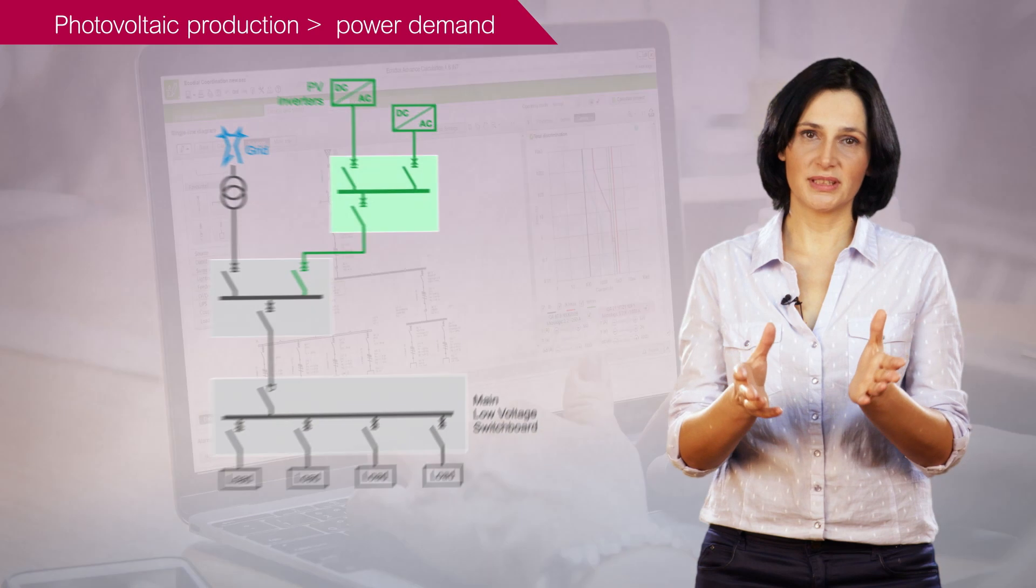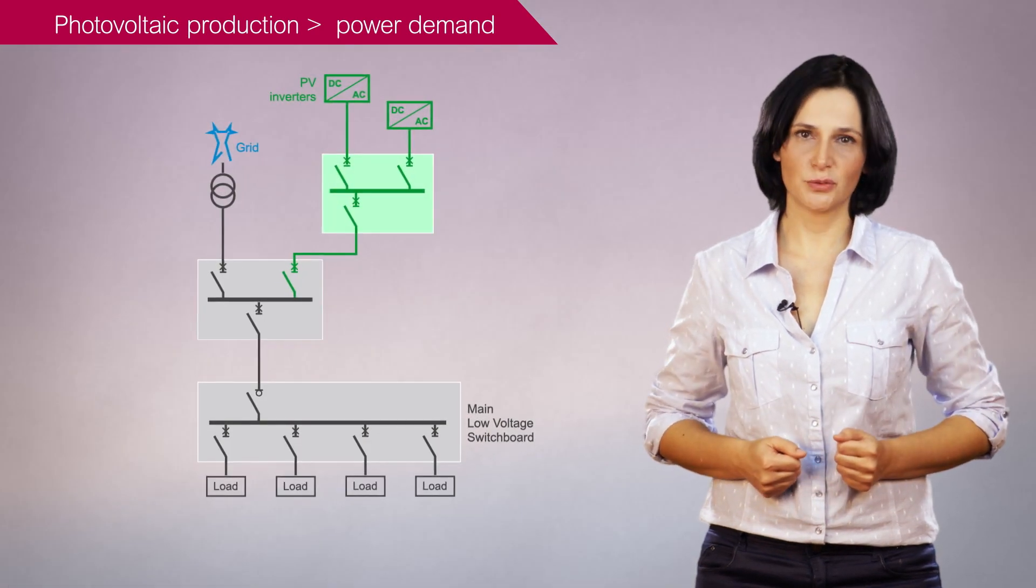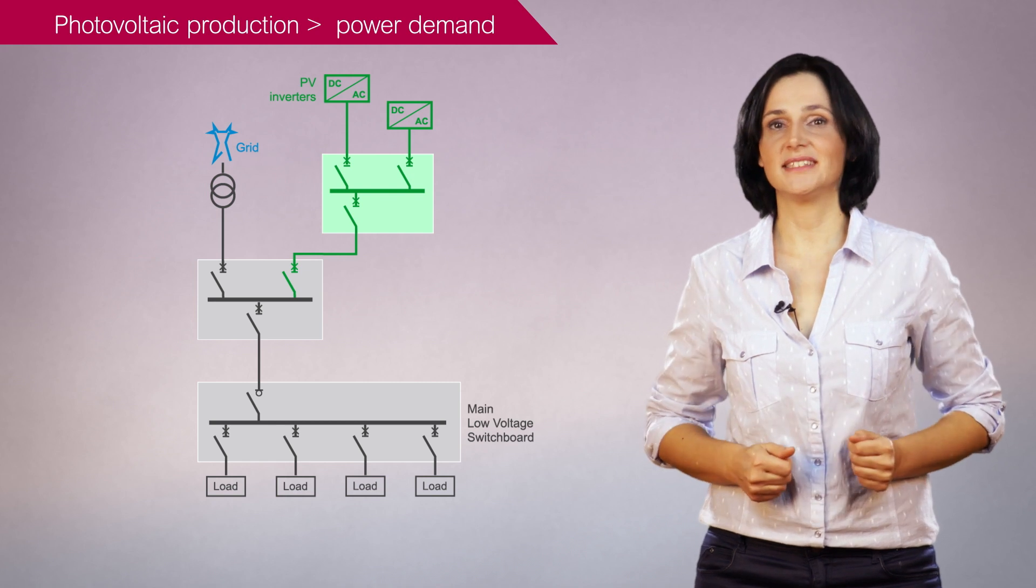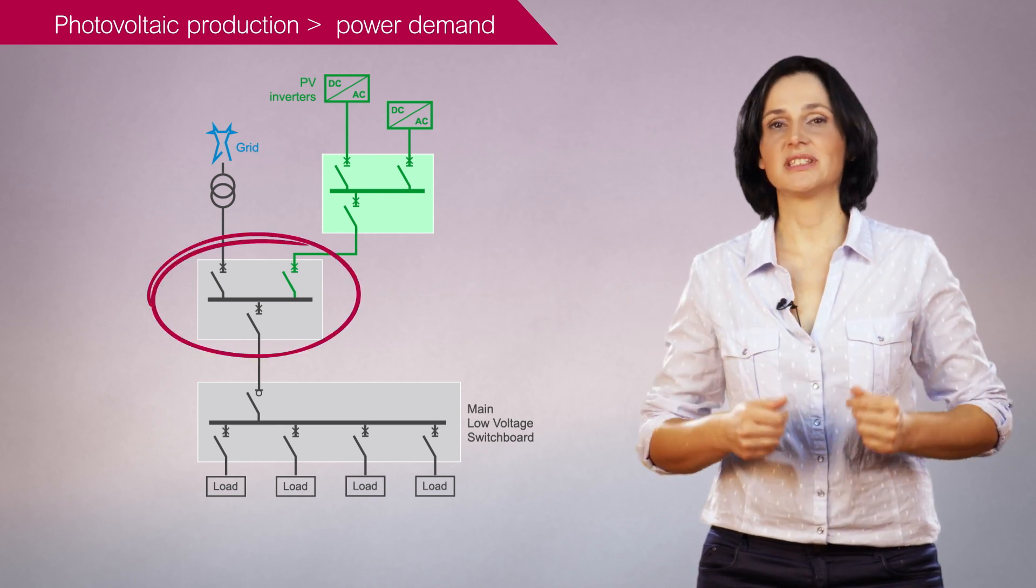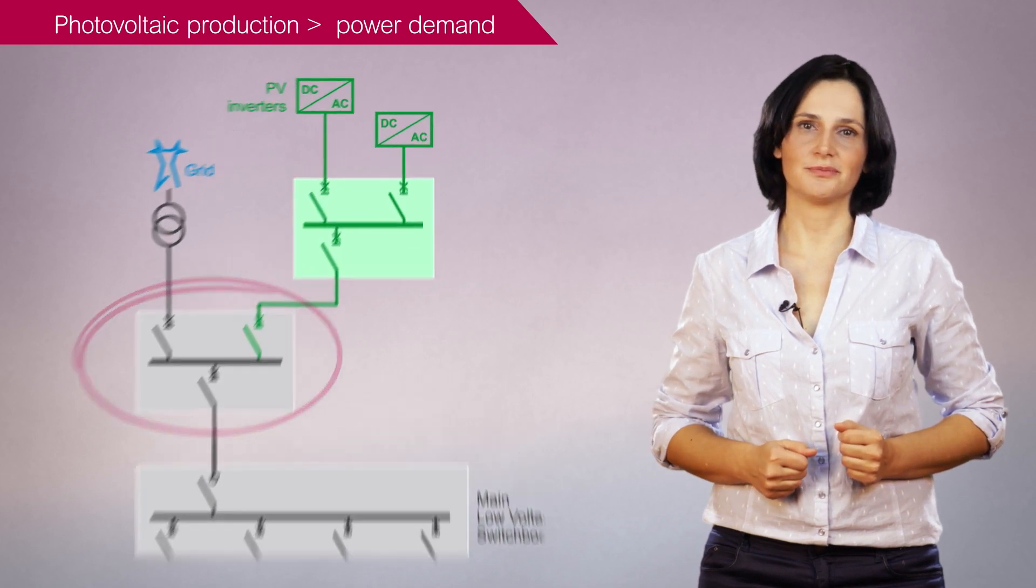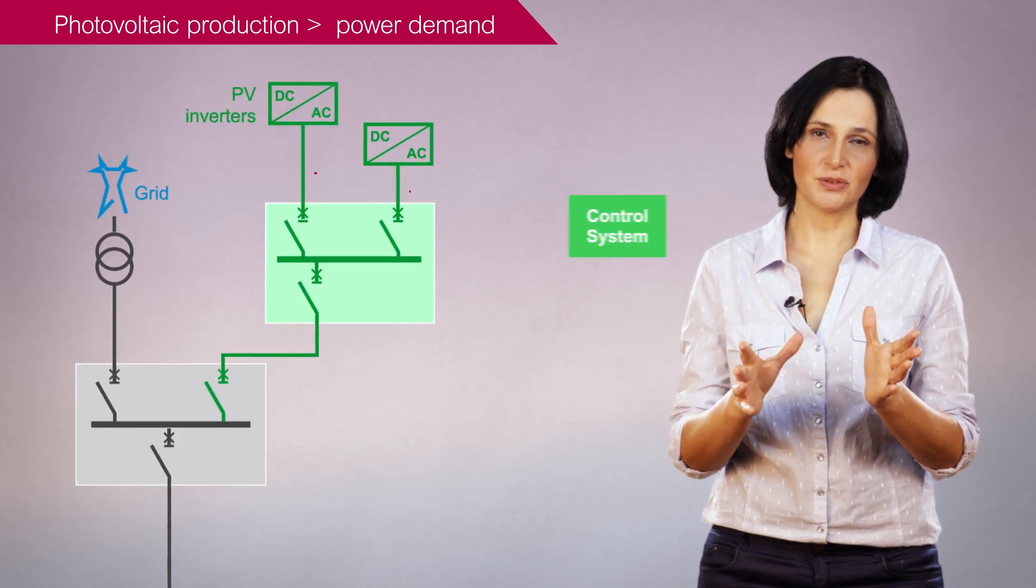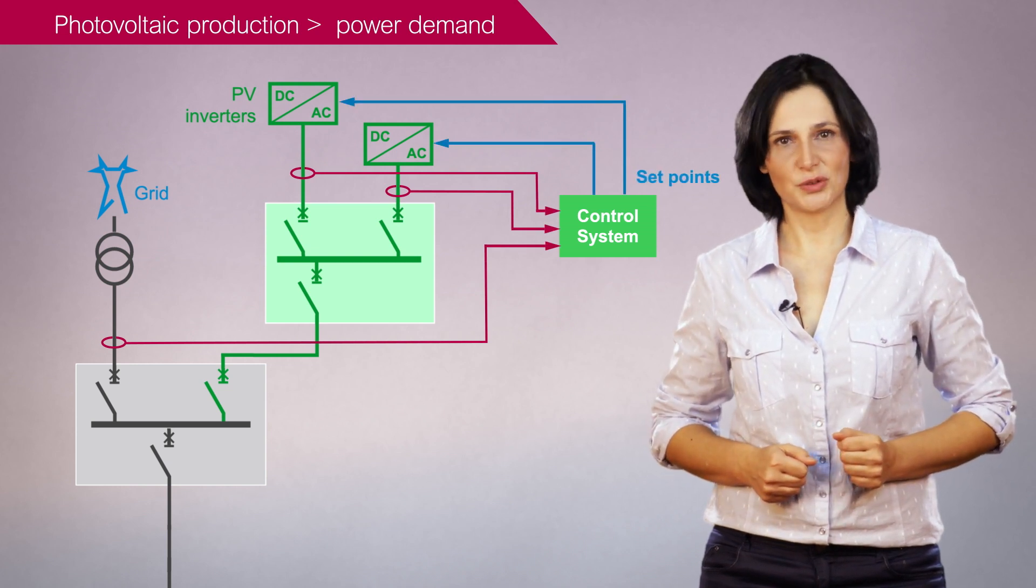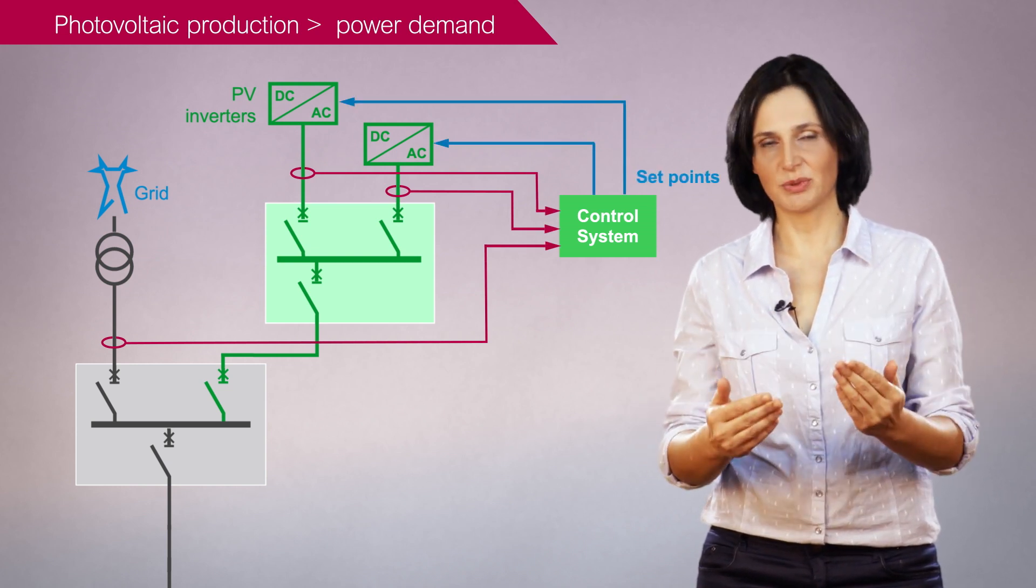However, for existing buildings, the following two tips are useful. Connecting the photovoltaic system upstream to the main busbar avoids the need for changes in the main switchboard. Using a control system to limit photovoltaic production can avoid the need to replace the transformer and its protection device.